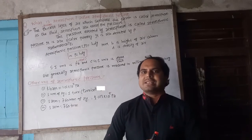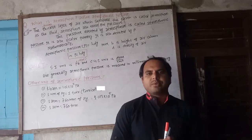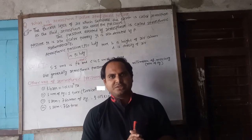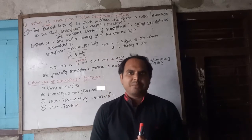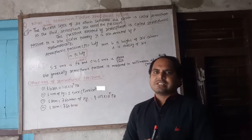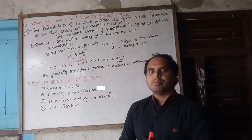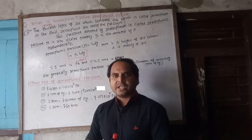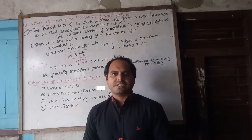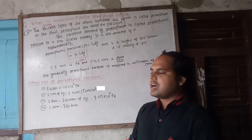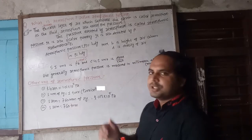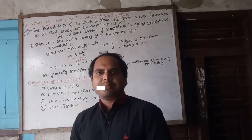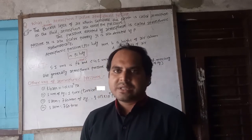Dyne per cm square is the CGS system unit, respectively. We can express the atmospheric pressure in the Pascal unit.